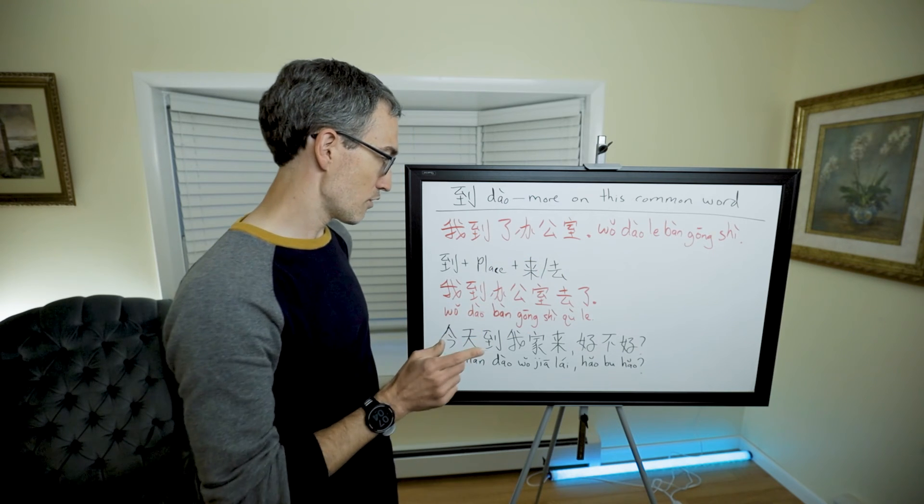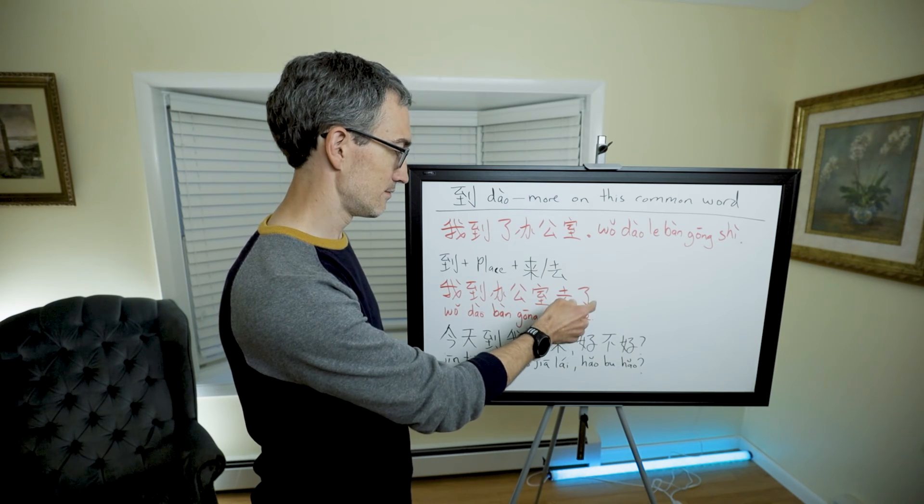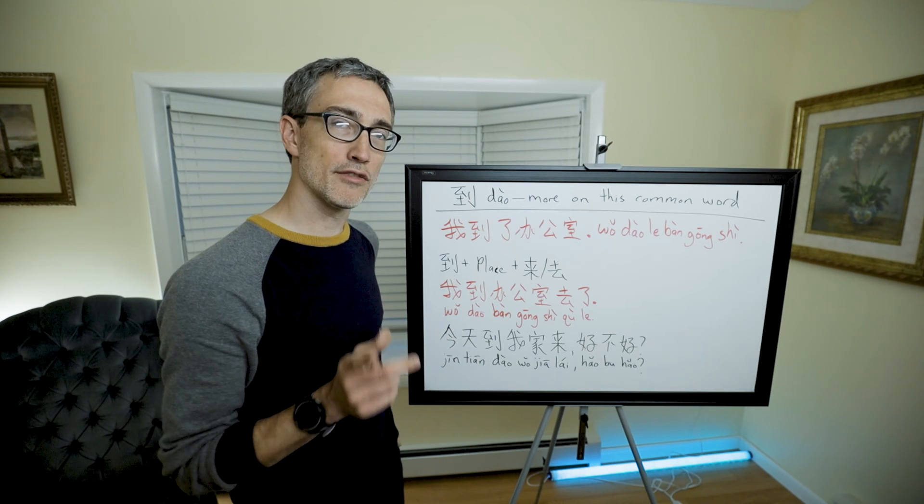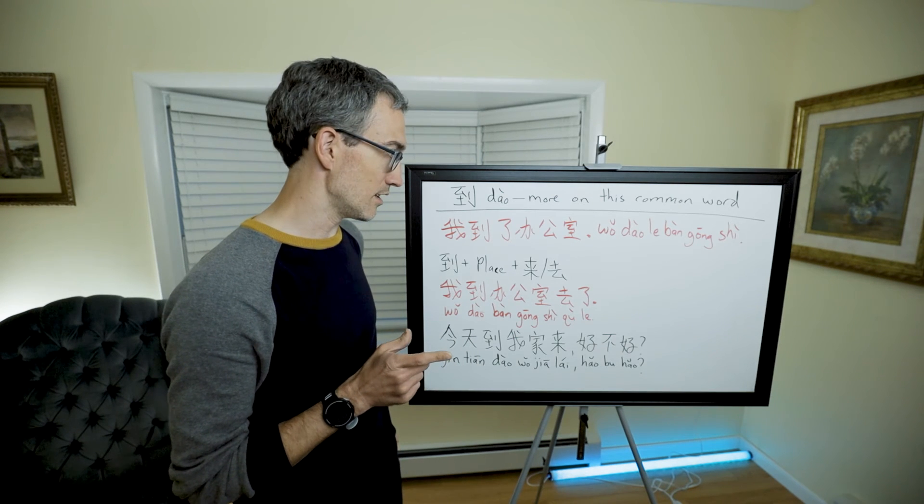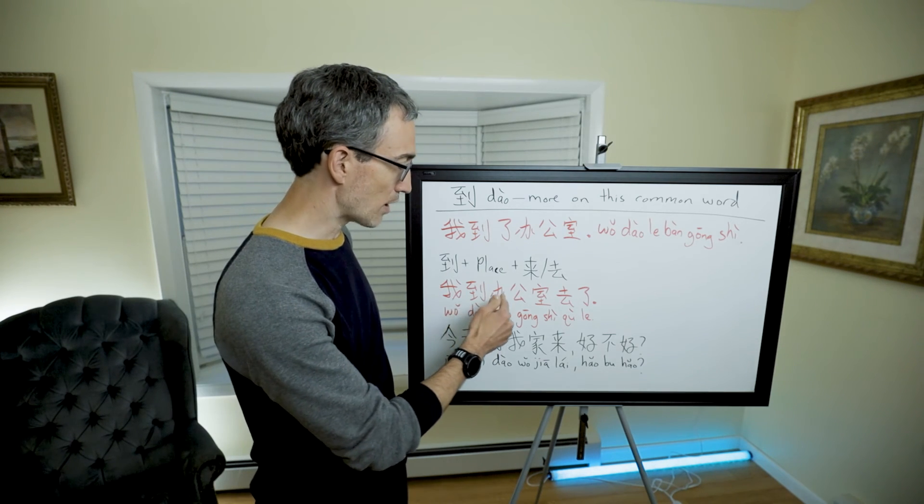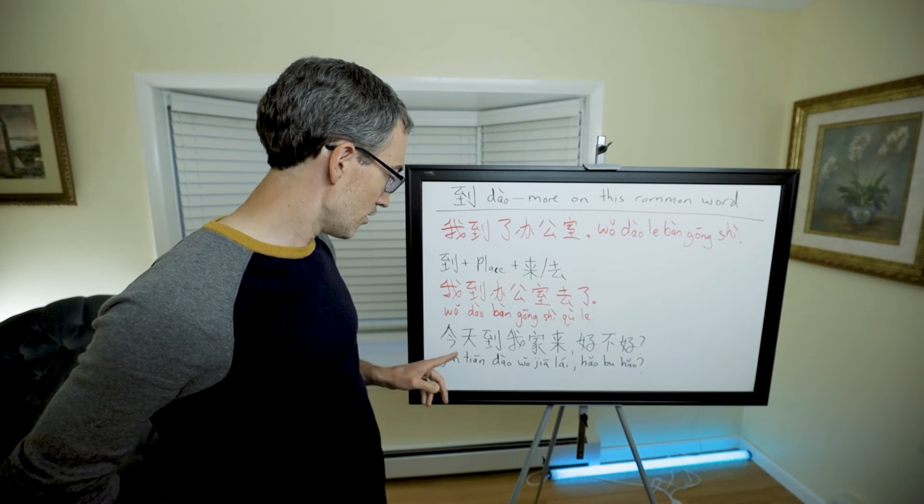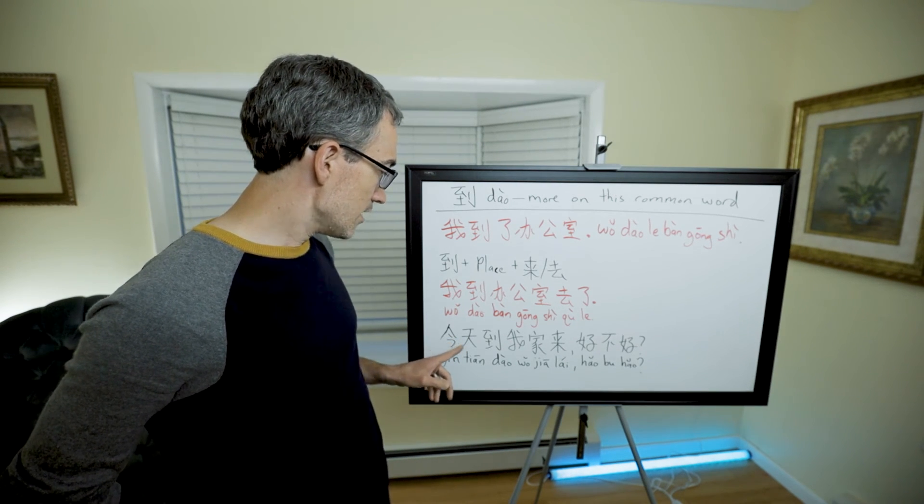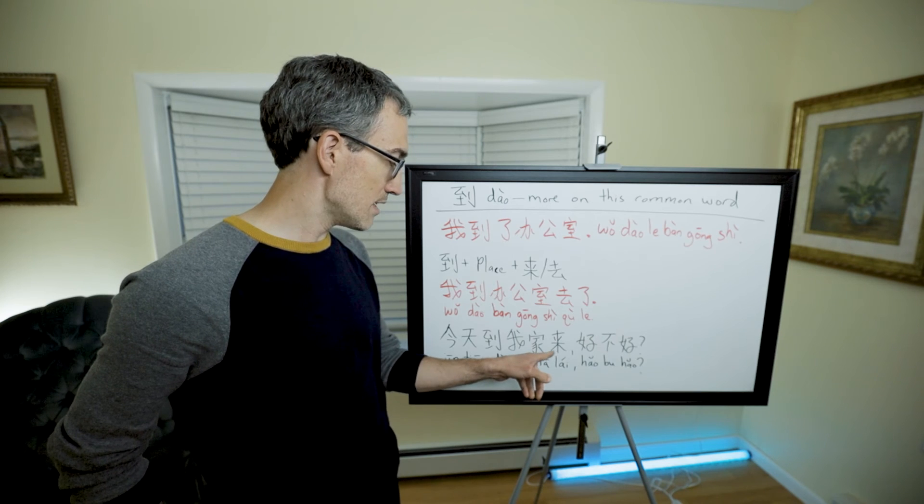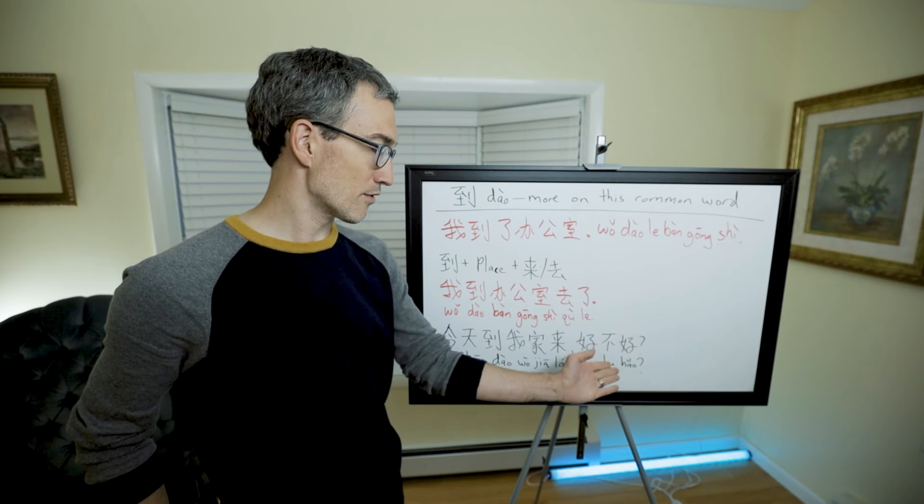For example, 我到办公室去了. That means I went to the office. 今天到我家来, today 到我家, 我家 means my home, 来 means come. So today come to my house, 好不好, how about that. 好不好 is a tag question meaning is that okay, is that good.